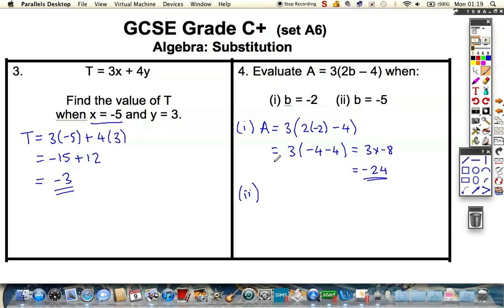Let's do the same thing again, but for this time, we want to evaluate it for when b is minus 5. So, let's write it out in steps, 3 brackets, 2 lots of minus 5.